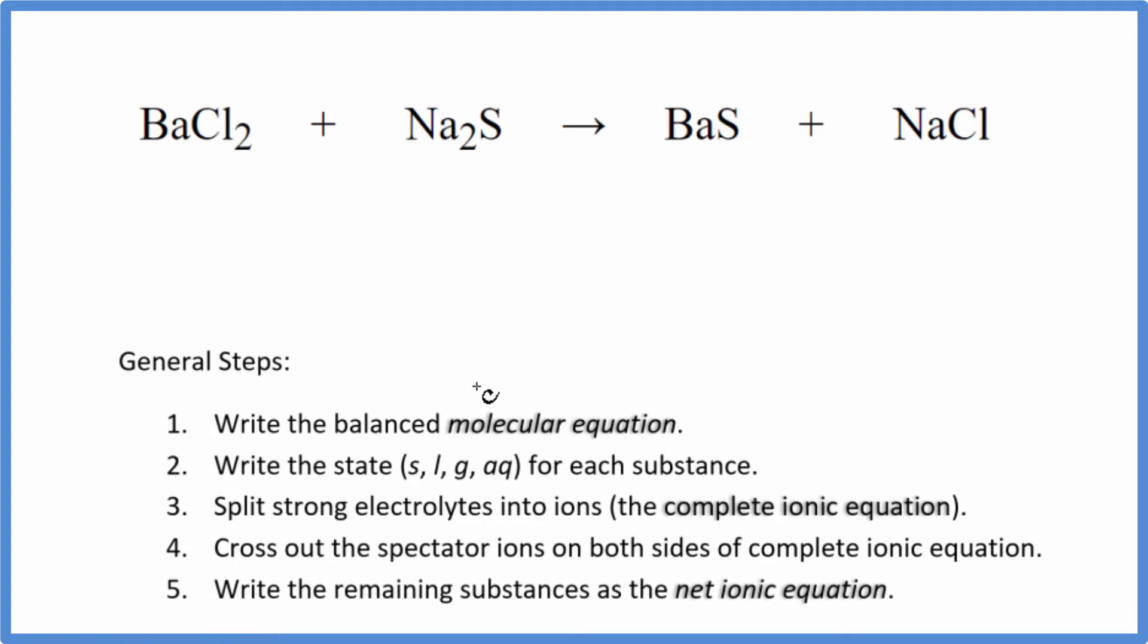First thing with net ionic equations, we need to balance the molecular equation. I can see I have two chlorine atoms here and just one here. I'm going to put a two in front of the NaCl. So the chlorines are balanced, two sodiums, have a sulfur here, sulfur here, barium, barium. We're done. This is the balanced molecular equation.